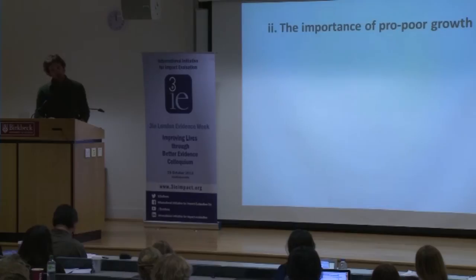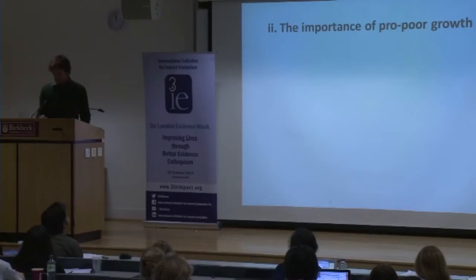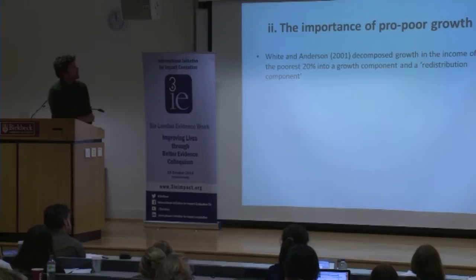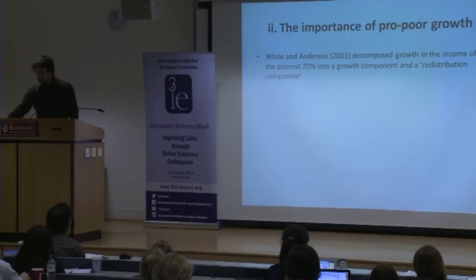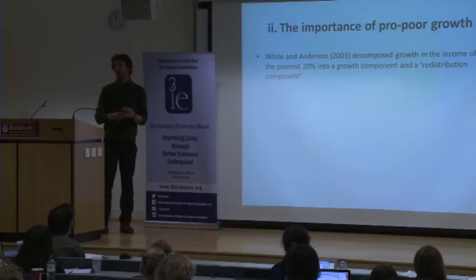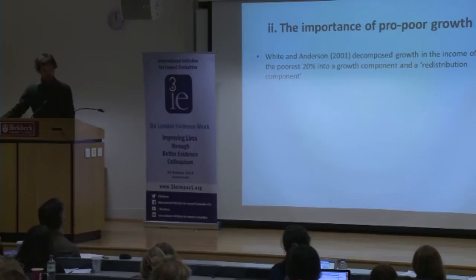Now let me talk about the second area where I think we've also got some quite good evidence, and this is about the importance of pro-poor growth to poverty reduction. This was actually one of the major contributions of White and Anderson, because one of the things we did was to decompose growth in the incomes of the poorest 20% of the population into a growth component and a redistribution component. The growth component is the rise in average income; the redistribution component is increases in the share of the poorest 20% in national income. Both of those things can contribute to a rise in the incomes of the poorest 20% — the question is which one is more significant in practice in recent decades.